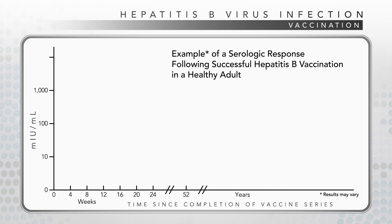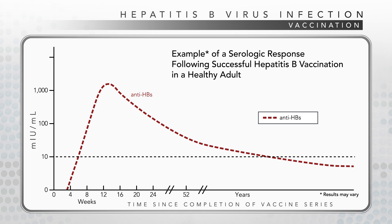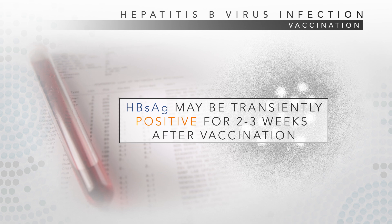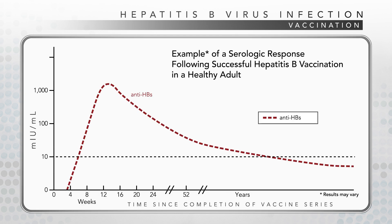Successful vaccination against HBV infection results in production of anti-HBs, with seroprotection defined as an anti-HBs level of 10 milli-international units per milliliter or more one to two months after completion of the vaccination series. HBsAg may be transiently positive for two to three weeks after vaccination, but this is clinically insignificant. A serologic test result of anti-HBs positive alone indicates immunity following vaccination with at least three doses of hepatitis B vaccine. Without repeated exposure to HBV, antibody levels will naturally decline over time, but immunity is likely maintained even if levels decline below 10 milli-international units per milliliter.